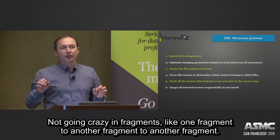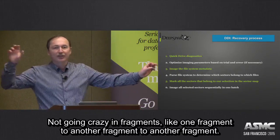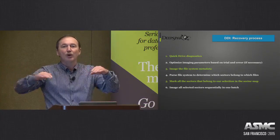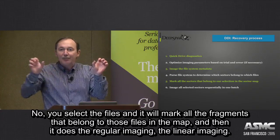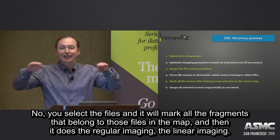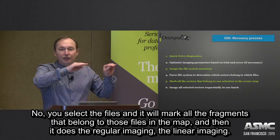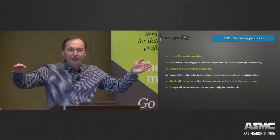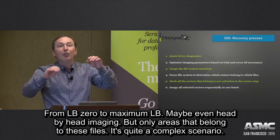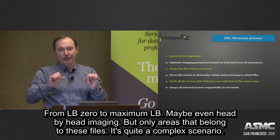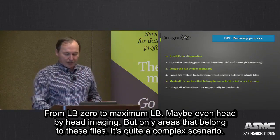So not like going through crazy fragments one by one — no. You select files, it marks all the fragments belonging to those files in the map, and then it does irregular imaging, linear imaging from LBA 0 to maximum LBA, maybe even head-by-head imaging, but only the areas that belong to your files. It's quite a complex scenario.